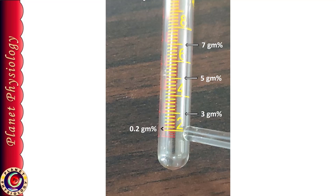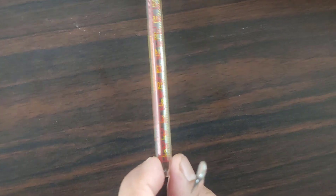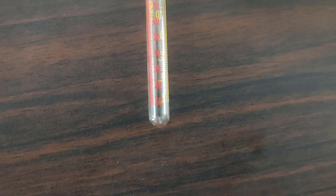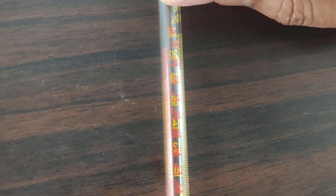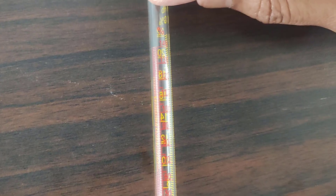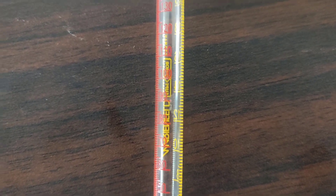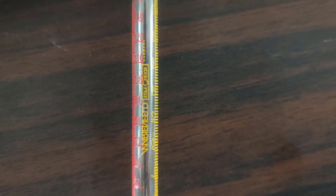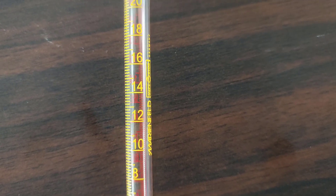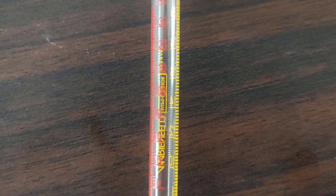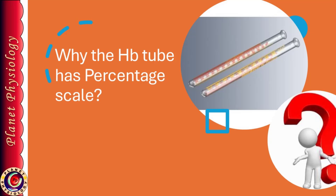Please understand this well because many students commit this mistake while taking readings. On the opposite surface of the tube, there is another scale in red that gives the hemoglobin reading in terms of percentage of normal hemoglobin. For example, 15 gram percent is considered as 100% hemoglobin. However, the value of 100% hemoglobin may vary as per the manufacturer, and hence this scale is not used routinely. In the tube being used here, 100% corresponds to 15 gram percent. Here is a thought question: why does the hemoglobin tube have this percentage marking if it is not used routinely? You can find the answer and post it in the comment section below.